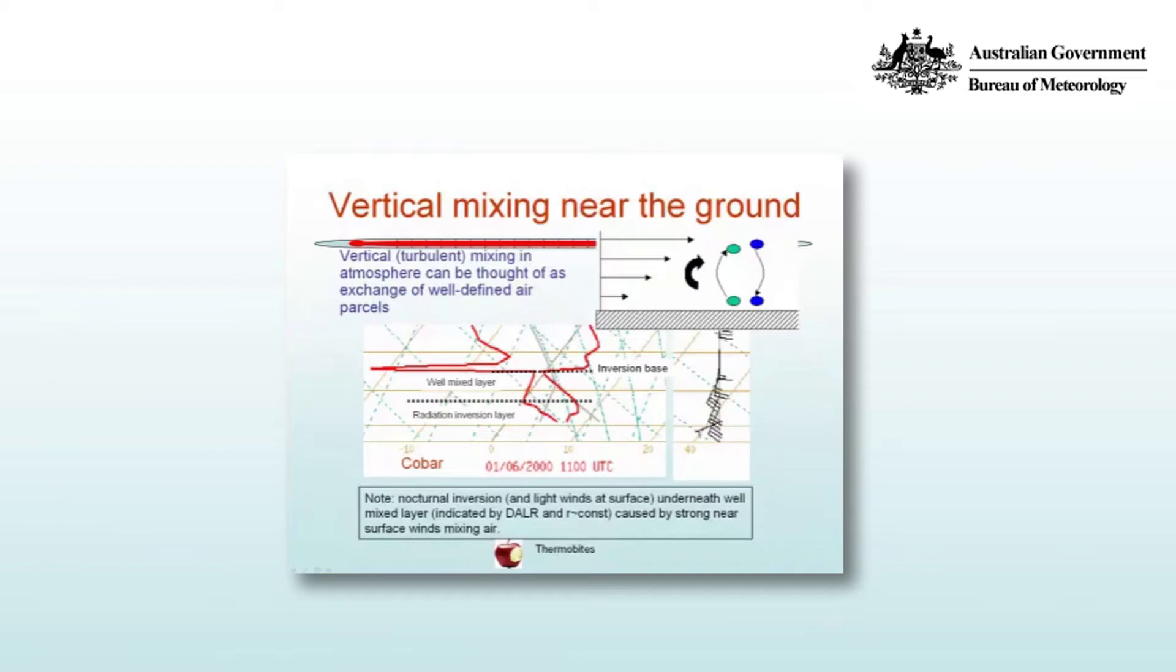We have a trace here for Cobar and on the right hand side you can see the wind profile, and it is really quite strong so one should expect mechanical mixing happening through that. The dotted lines represent the top and the bottom of the well mixed layer. You can see the well mixed layer by the fact the dew point profile is very close to an isopleth of mixing ratio and the temperature profile is essentially a dry adiabat.